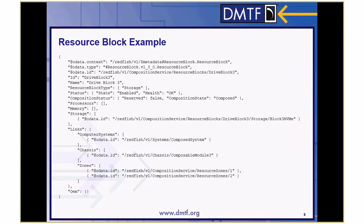This is a sample payload for a resource block. The resource block type property is used to help a client classify the resource block as a given type. In this case, it contains the value "storage", so a client can expect to find storage or simple storage types of resources.